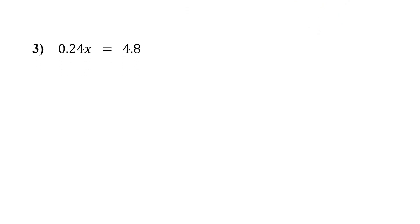Pause the video and try this one with both methods. All right, let's start by solving it the direct way. x is being multiplied by 0.24. So to get x by itself, we divide both sides by 0.24 — on the left these cancel out, leaving x. What is 4.8 divided by 0.24? Dividing decimals can feel tricky, but if you want to see why the second method helps, try doing this division by hand. For now, I'll just use a calculator, and we get 20.